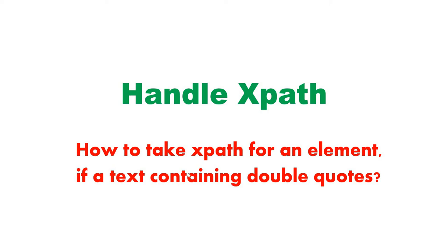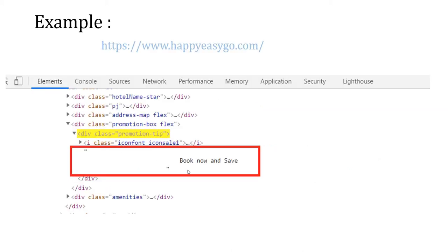Hello friends, today we are going to be looking into how to take XPath for an element if your text contains double quotes. I'll show you an example — this text contains double quotes. So how can we take XPath for this text? Now I'm going to show you in real time.